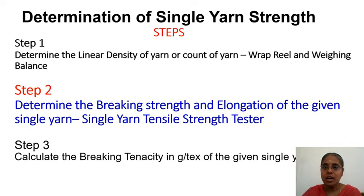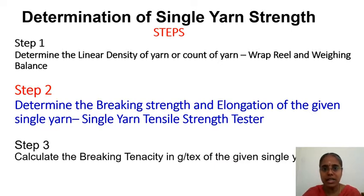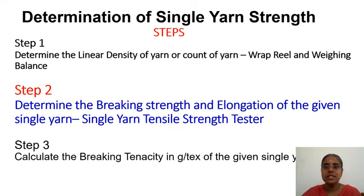The first step is now complete — the count has been determined as 14.95 tex using the wrap reel and weighing balance. The second step is to determine breaking strength and elongation using the single yarn strength tester. We are using a CRE (Constant Rate of Extension) type electronic tester. Other types include CRT type mechanical and CRT type motorized instruments.